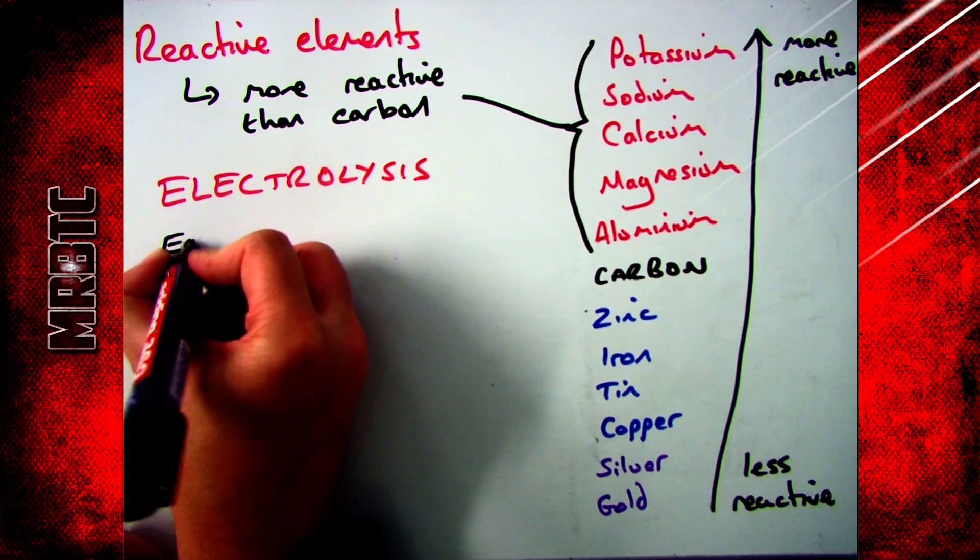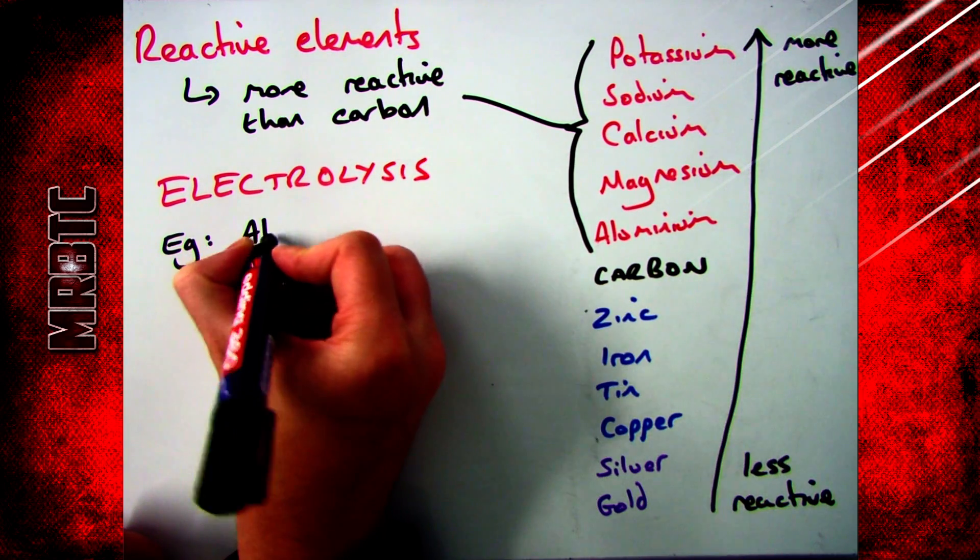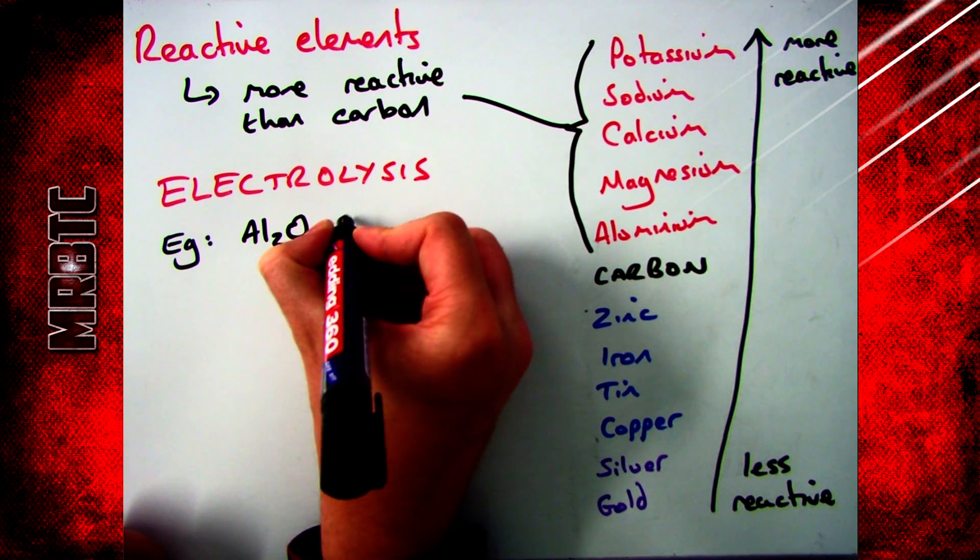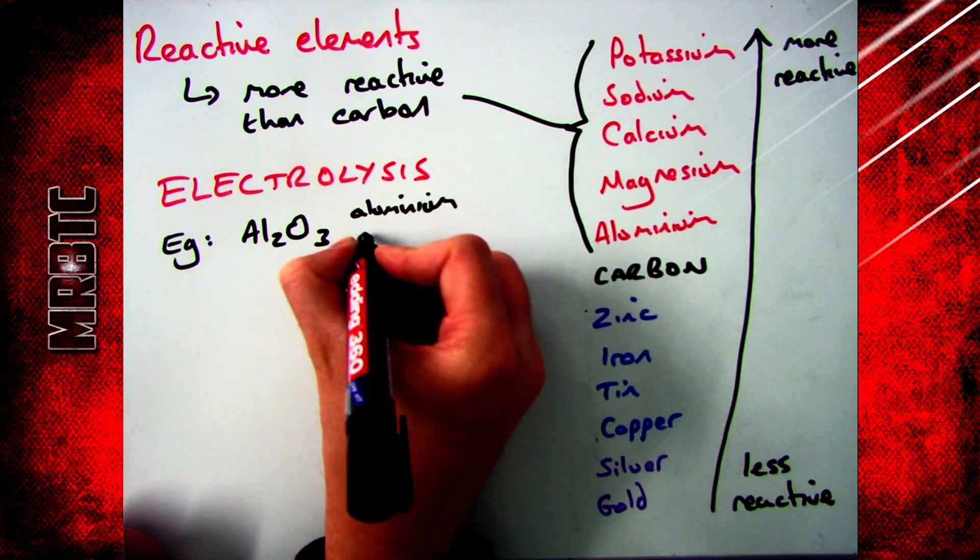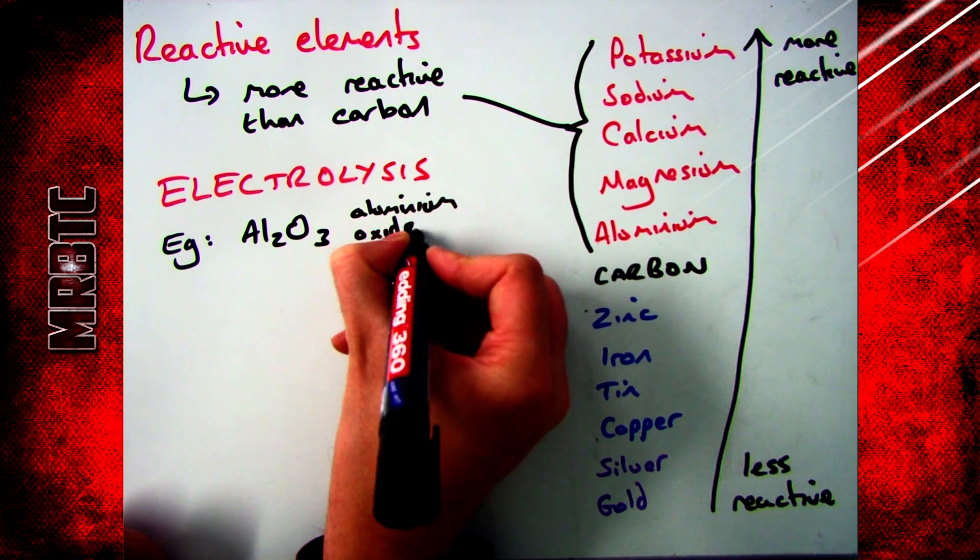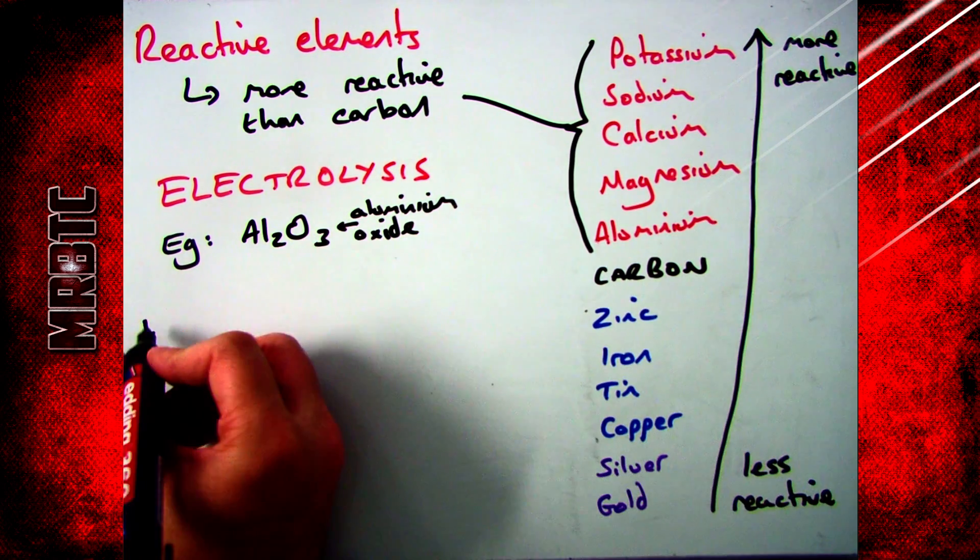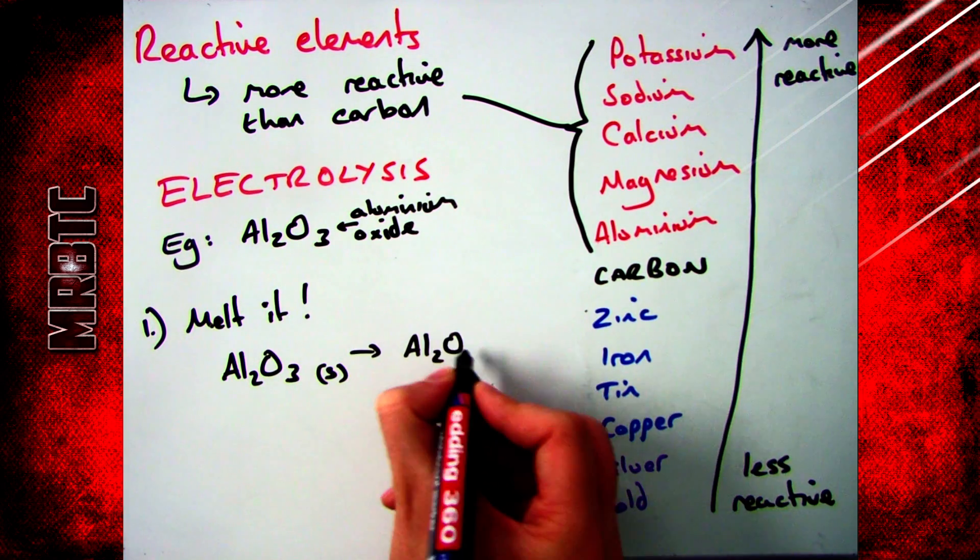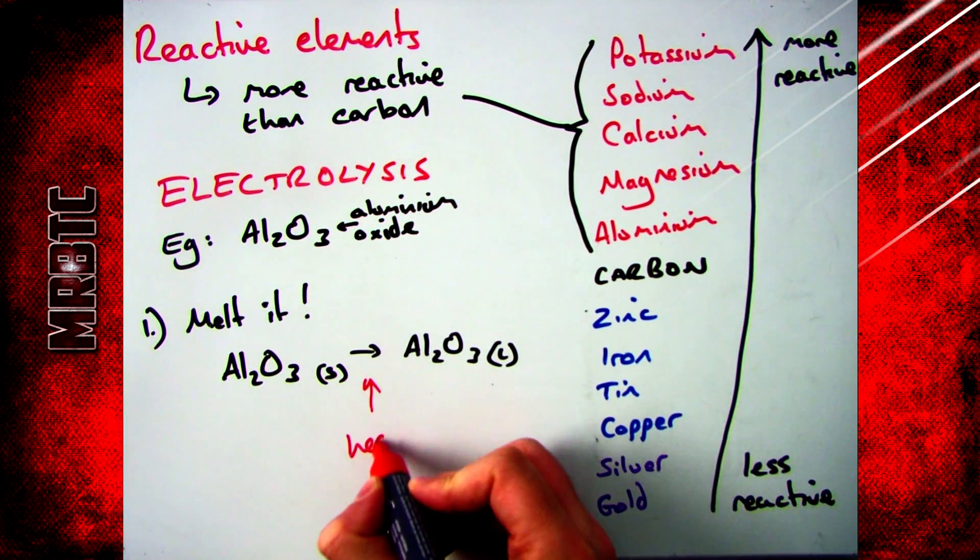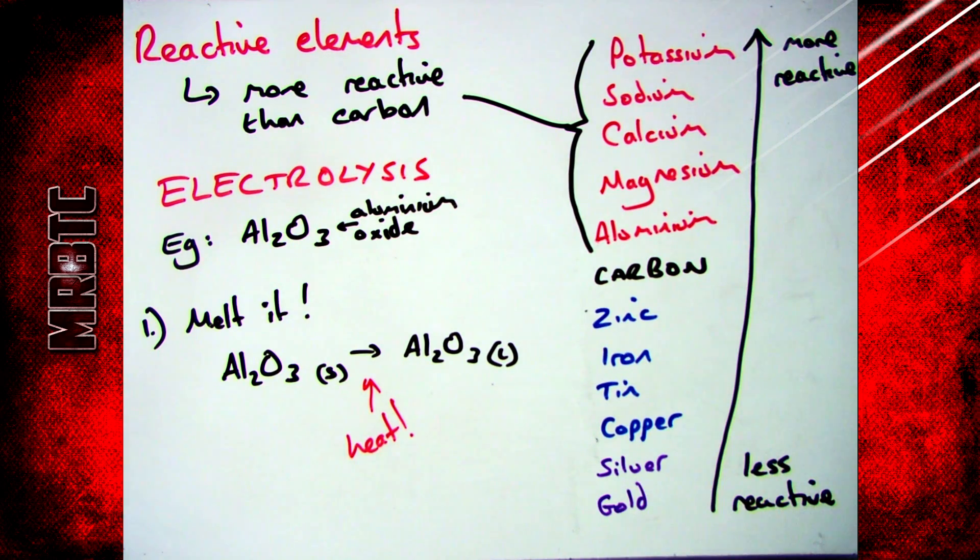In order to tell you what electrolysis is, I'm going to use the example of aluminum oxide. Aluminum oxide is one of the metals that is more reactive than carbon, so you can't heat with carbon. What you do is you split it up with electricity, which is your electrolysis. In order to be able to do that, the first thing you've got to do is have molten aluminum oxide, so you have to melt it. In the case of aluminum oxide, you need to use something special, and that is cryolite, which is a form of aluminum which is helpful in dissolving aluminum oxide.